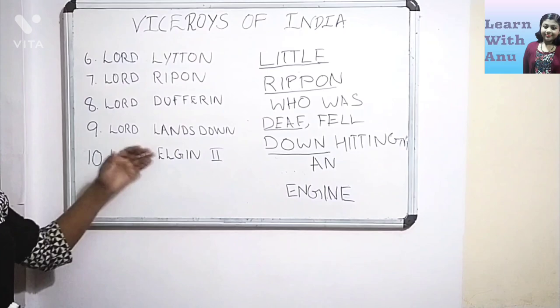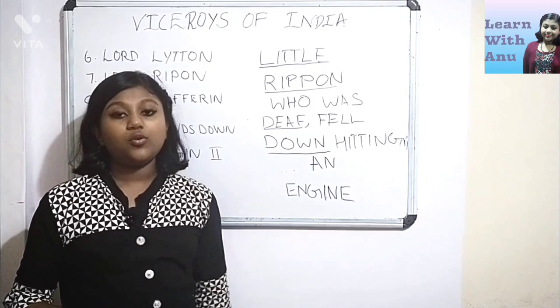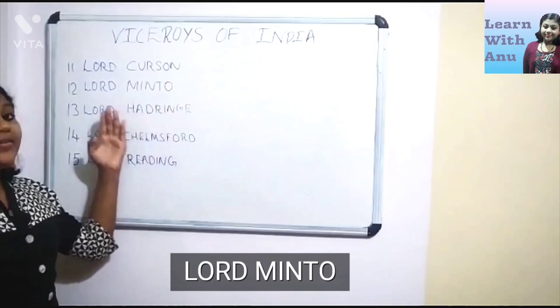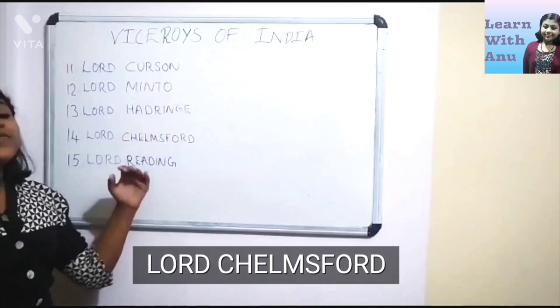The tenth Viceroy is Lord Elgin the second. Now let's jump to our next set of Viceroys. Here comes our 11th Viceroy, Lord Curzon. Next was Lord Minto, and then Lord Hardinge. After Lord Hardinge comes Lord Chelmsford, and our 15th Viceroy was Lord Reading.